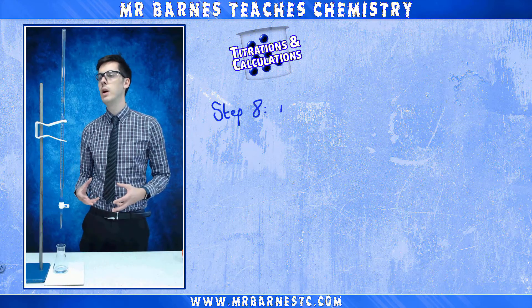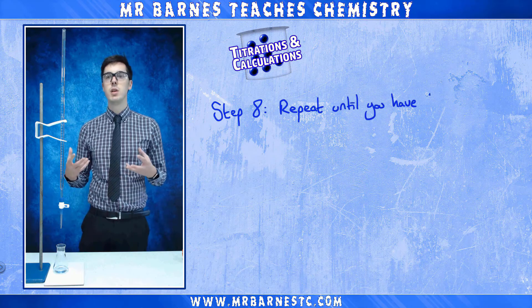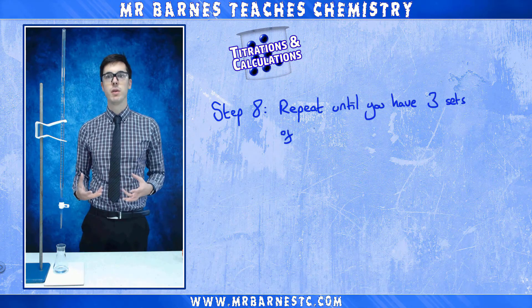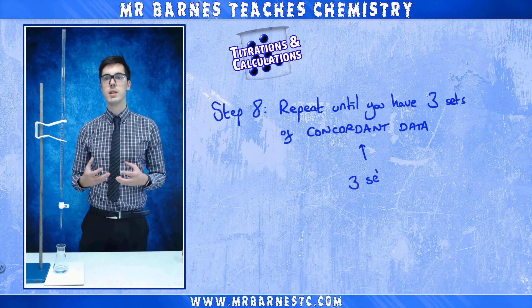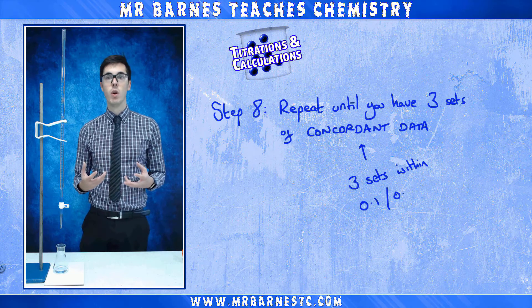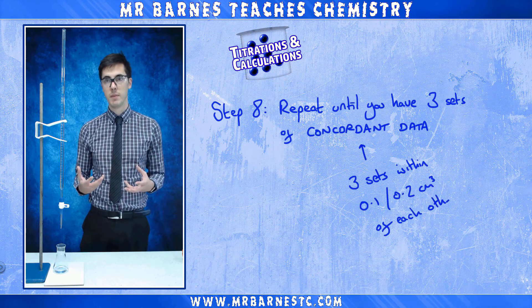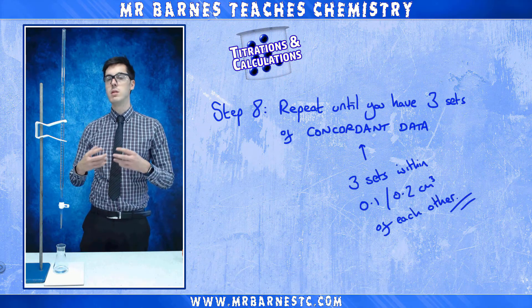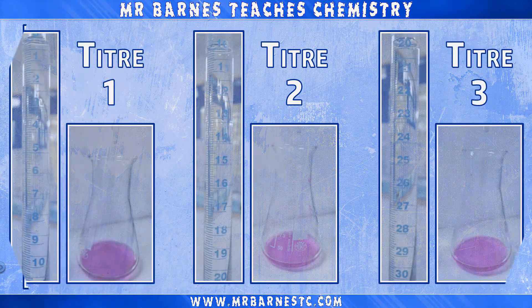What you want to do now is repeat this experiment until you have three sets of concordant data. By concordant I mean three sets within 0.1–0.2ml of each other. So you're going to do that three times.